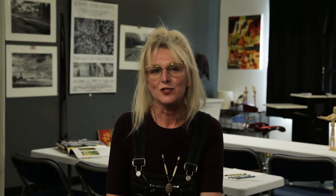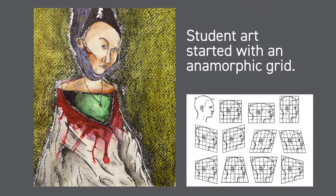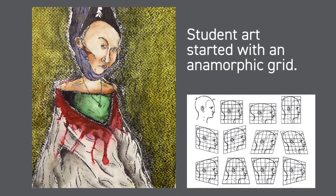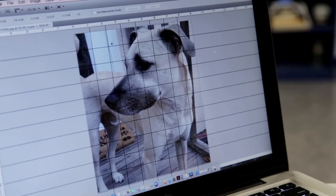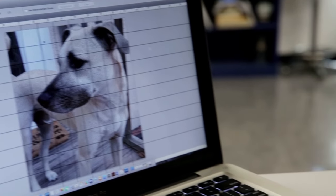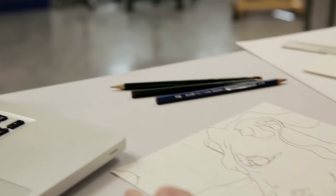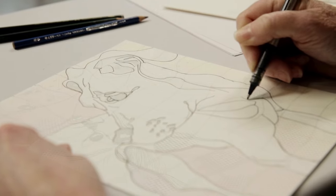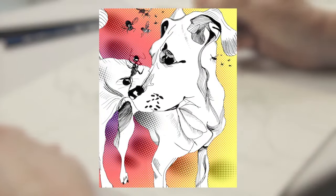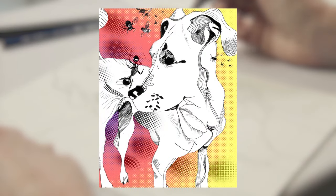Use an anamorphic grid, which will force you to make unusual distortions in your composition. This student art started with an anamorphic grid. Here's a one-inch grid I put over my dog, and then made an expressive anamorphic grid on paper to distort the image.